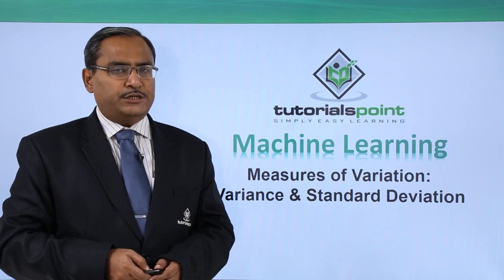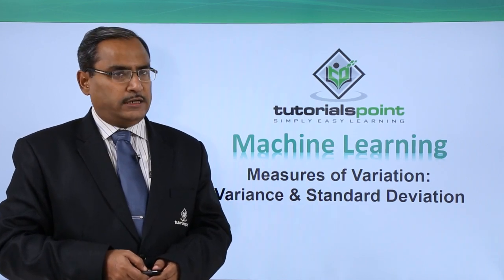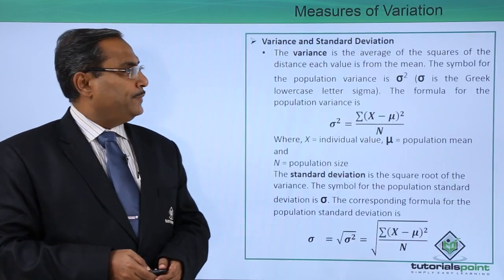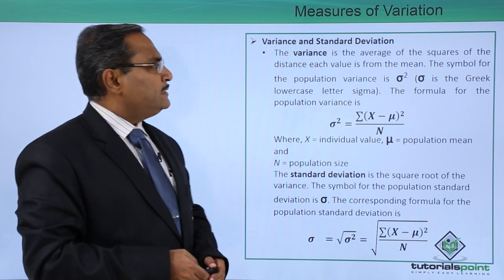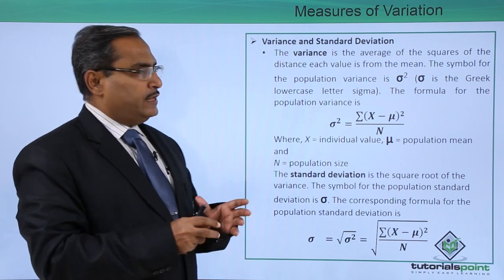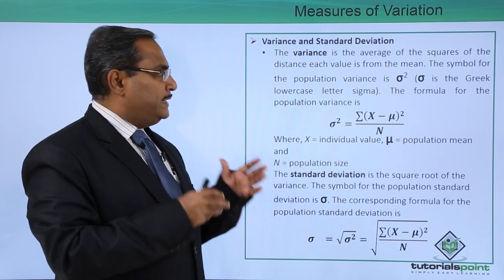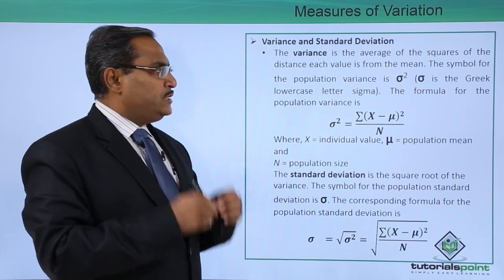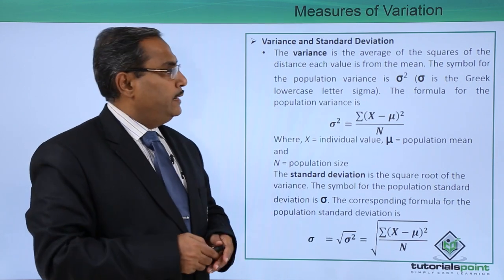Measures of variation: variance and standard deviation. The variance is the average of the squares of the distance each value is from its mean.